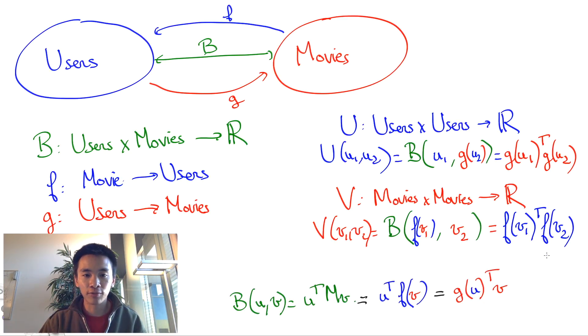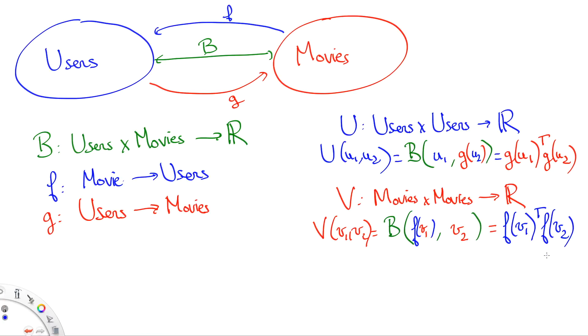These two bilinear forms consist in taking two vectors in one space and measuring their similarities by comparing their images in the other space. It is quite straightforward to see that U and V are indeed symmetric semi-definite positive, but if you have doubts, I highly encourage you to verify this by yourself.